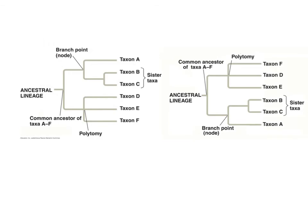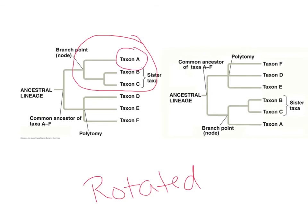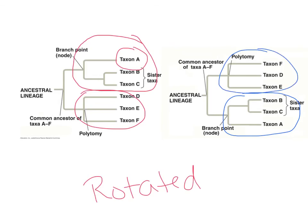Something else to be aware of: these diagrams can be drawn to say the exact same thing even though they may look a little different. For example, these two diagrams have been rotated. They say the exact same thing — A is the outlier with B and C together, and there's a common ancestor for D, E, and F. These are the exact same diagrams; they tell you the exact same thing.